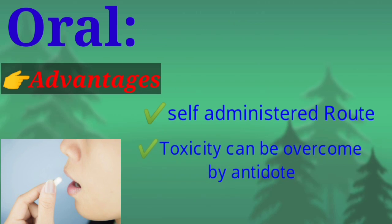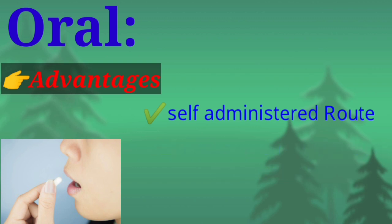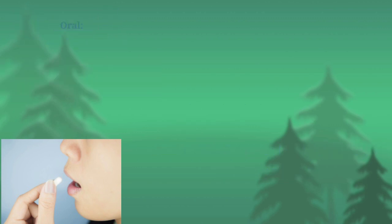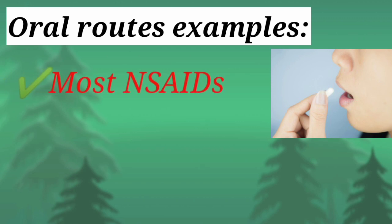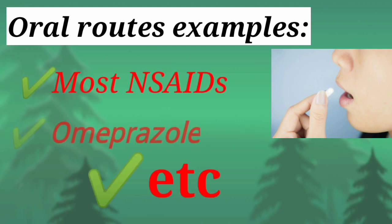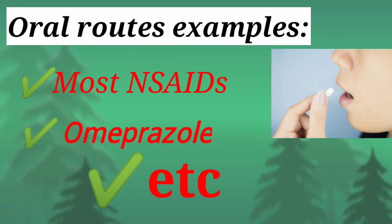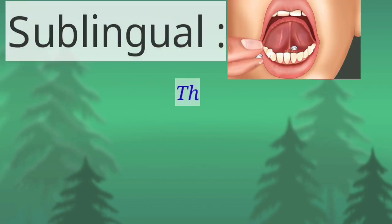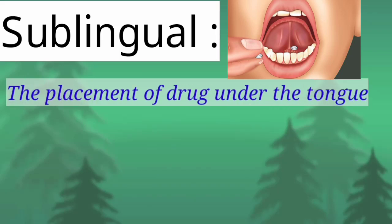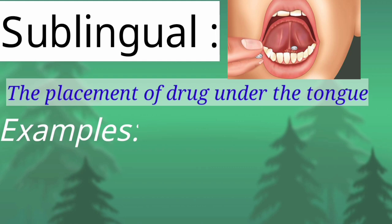The advantages of the oral route are that it is a self-administered route, and toxicity can be overcome by antidote if the drug causes toxicity. Examples of oral route drugs are most NSAIDs, omeprazole, and many others that can be administered into the body through the mouth.